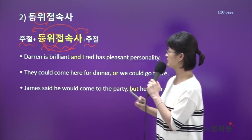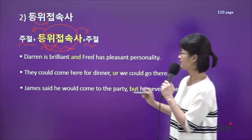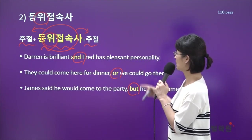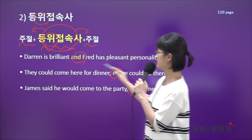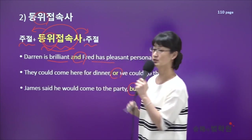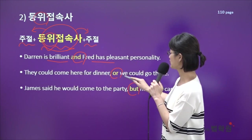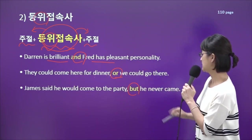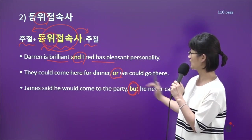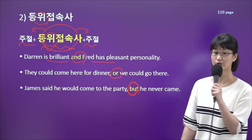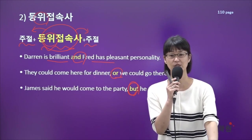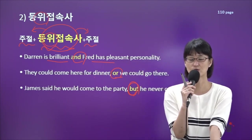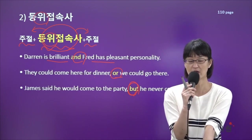예문으로는 등위접속사의 위치만 확인해볼게요. and, or, but 다 대표적인 등위접속사의 일종이고, 첫 번째 예문에서 보시면 and가 절과 절 사이에 들어있죠. 두 번째 예문에서도 등위접속사 or가 절과 절 사이에 왔고, 세 번째 예문에서도 등위접속사 but이 또 절과 절 사이에 왔어요. 여기까지 기본적인 접속사의 개념이 끝났고, 뒤에 파트 4부터는 본격적으로 명사절, 형용사절, 부사절을 배우실 거예요.